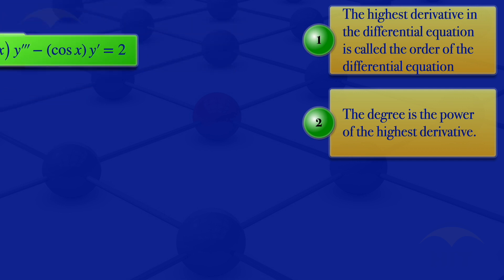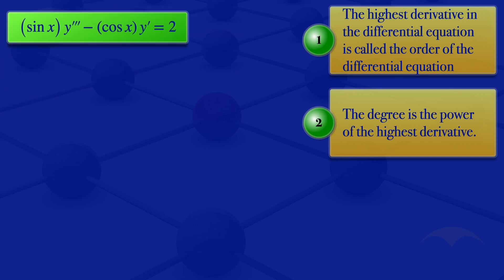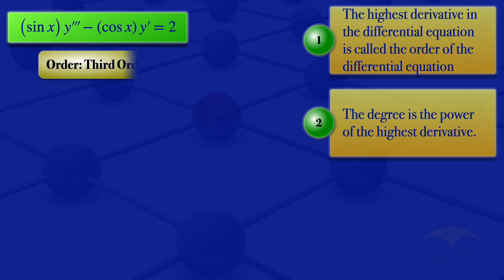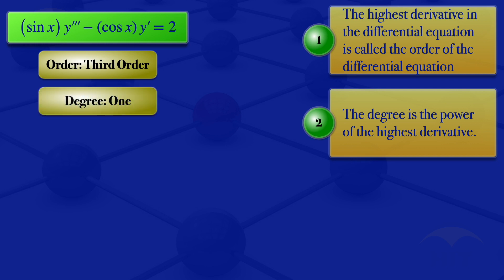Moving on to the next ODE: sin x multiplied by y''' minus cosine x multiplied by y' equals 2. The highest derivative is y''', which is the third derivative, so the differential equation is third order. The power of that highest derivative is 1, so its degree is 1. That is a third order ODE with degree 1.